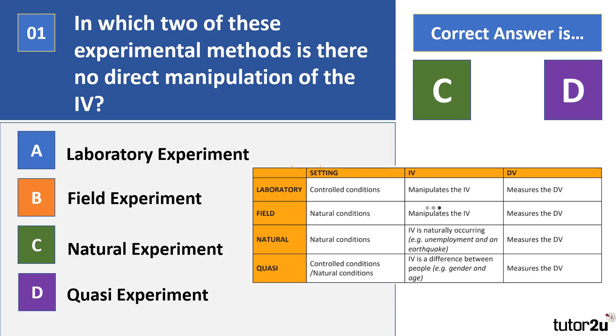So for experimental methods, you have to know lab, field, natural, and quasi. In terms of this area, students often get mixed up or don't understand what a quasi experiment is. In a quasi experiment, the independent variable is a fixed quantity. So let's say I wanted to explore the differences on a memory score between genders, so gender male and female is my IV.